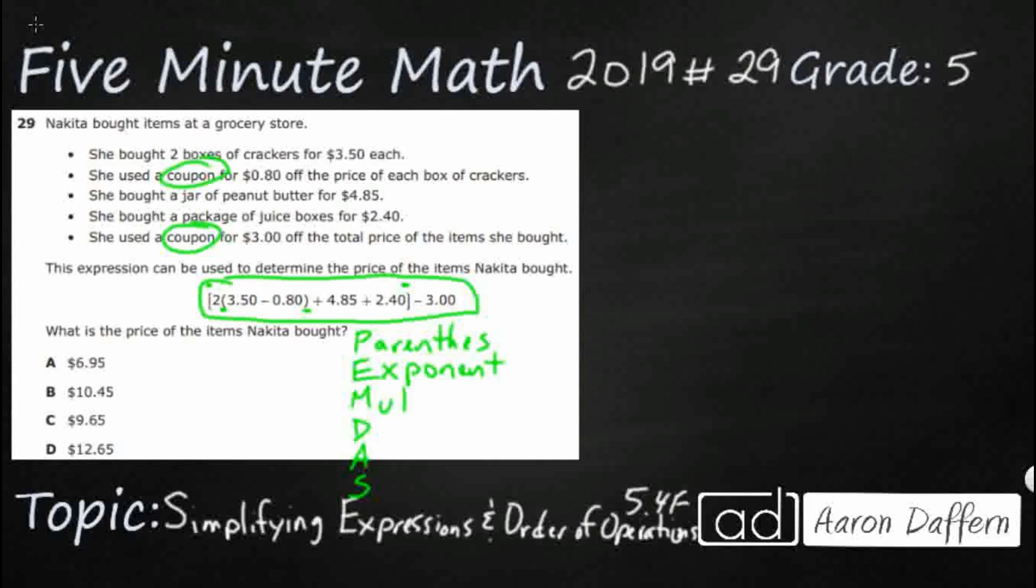Then we have exponents, which we really don't worry about in fifth grade. That's more of a sixth grade thing. Then we have multiplication and division. Those are inverse operations, which means they're equal, which means if you see a division first, going left to right, you can do that before you multiply. That's perfectly fine. And then we have addition and subtraction. Those are also equal. They're on the same level. They're inverse operations. So if you see subtraction first before addition, that's totally fine. We just have to have them in a certain order in order to make our little saying work.